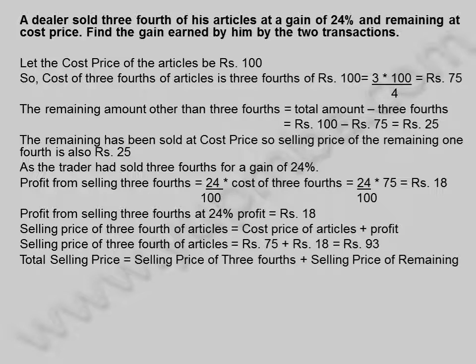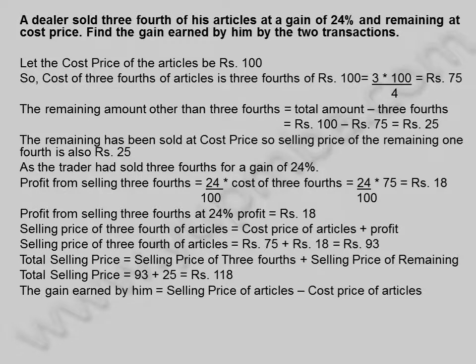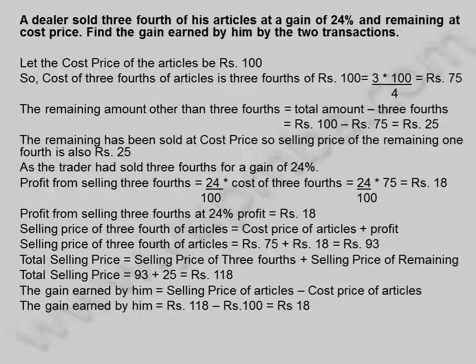Total selling price is equal to selling price of 3/4 plus selling price of remaining, equal to 93 plus 25, equal to 118 rupees. The gain earned by him in two transactions is equal to 18 rupees.